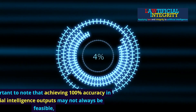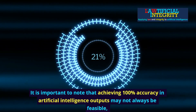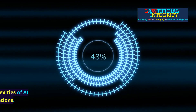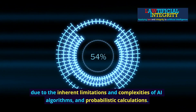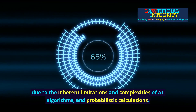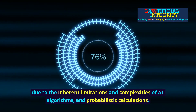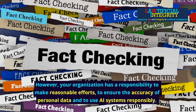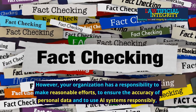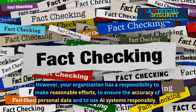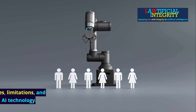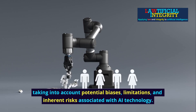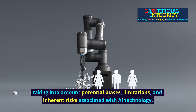It is important to note that achieving 100% accuracy in AI outputs may not always be feasible, due to the inherent limitations and complexities of AI algorithms and probabilistic calculations. However, your organization has a responsibility to make reasonable efforts to ensure the accuracy of personal data and to use AI systems responsibly, taking into account potential biases, limitations, and inherent risks associated with AI technology.